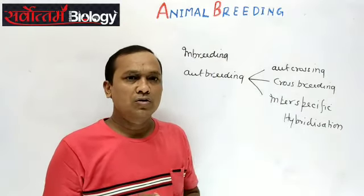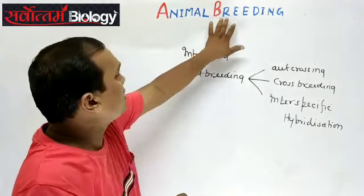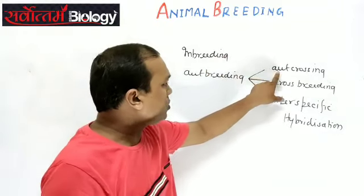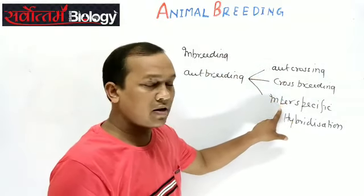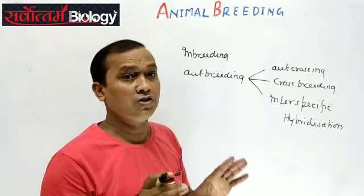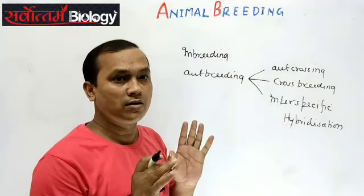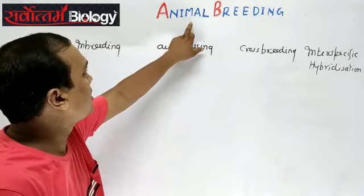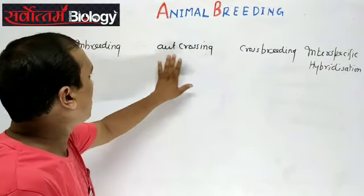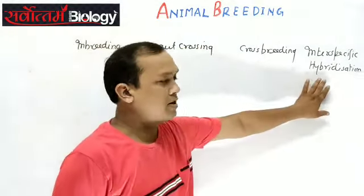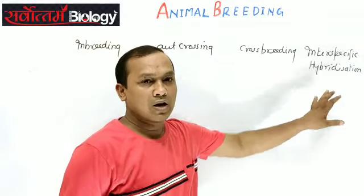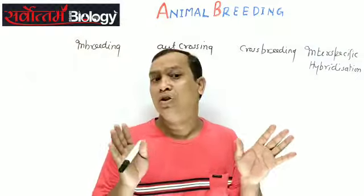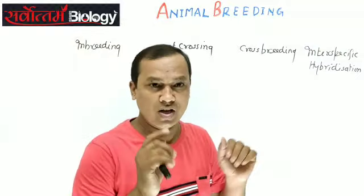Simply, we will read it as: animal breeding is of four types — inbreeding, out-crossing, cross-breeding, and interspecific hybridization. Let us clear each one by one. We must be completely clear about the difference between these four types.